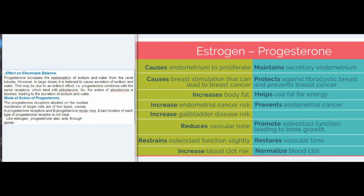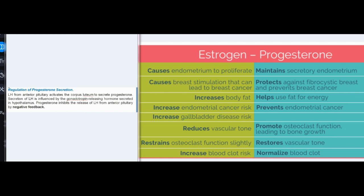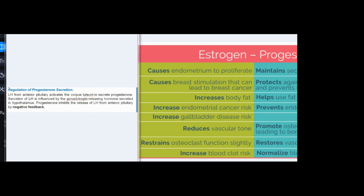Mode of Action of Progesterone. The progesterone receptors situated on the nuclear membrane of target cells are of two types: A progesterone receptors and B progesterone receptors. The exact location of each type is not clear. Like estrogen, progesterone also acts through genes. Regulation of Progesterone Secretion: LH from the anterior pituitary activates the corpus luteum to secrete progesterone. Secretion of LH is influenced by gonadotropin-releasing hormone secreted in the hypothalamus. Progesterone inhibits the release of LH from the anterior pituitary by negative feedback.